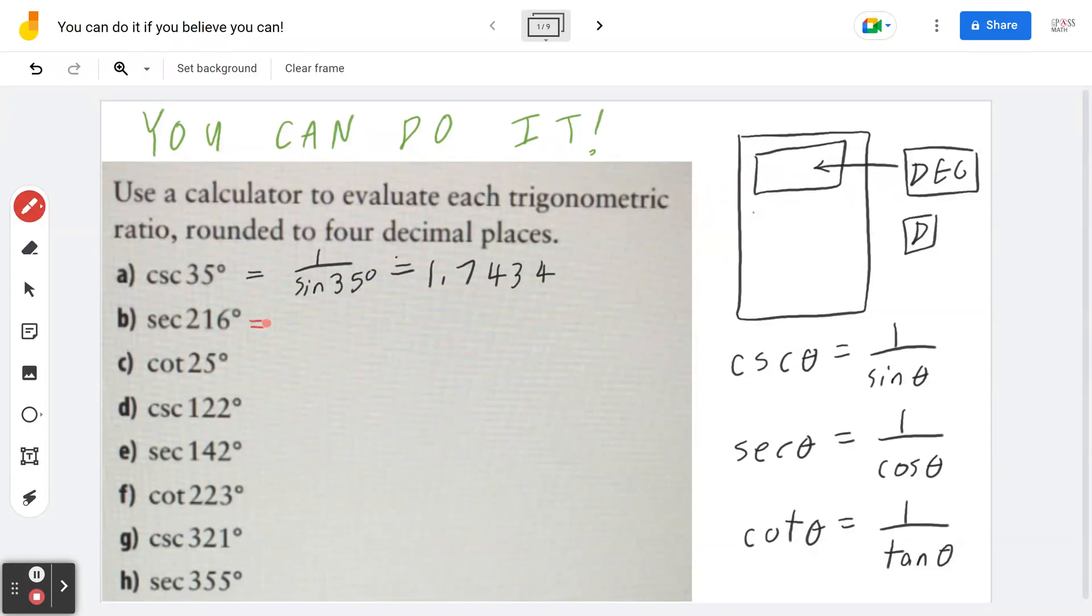Likewise, if I look at the next one, secant of 216 degrees is 1 divided by cosine of 216 degrees. I press 1 divided by cosine of 216 degrees, which is approximately negative 1.2361 accordingly.